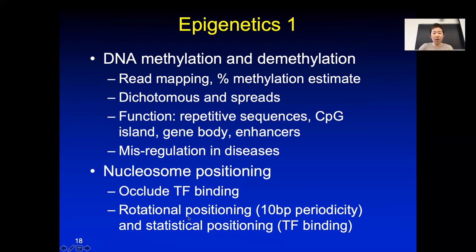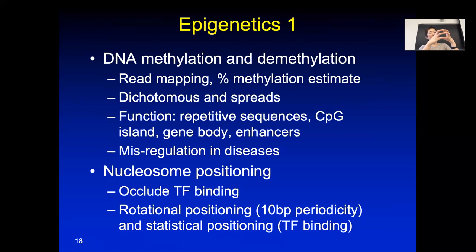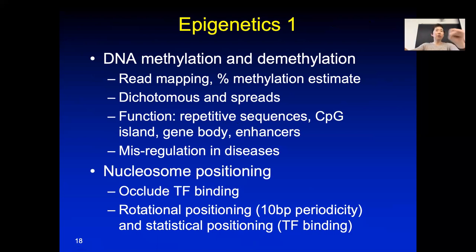In terms of nucleosome positioning, we can now use high-throughput sequencing to get it. There are two levels of positioning: rotational positioning, because DNA has a 10-base-pair periodicity for GC-rich versus AT-rich regions — the nucleosome likes CGs facing the inside histones and ATs facing outside. The more important thing is statistical positioning: when a transcription factor goes in and squeezes out the nucleosome, it helps position the flanking nucleosomes, and that positioning gives a hint about whether the transcription factor is binding strongly.